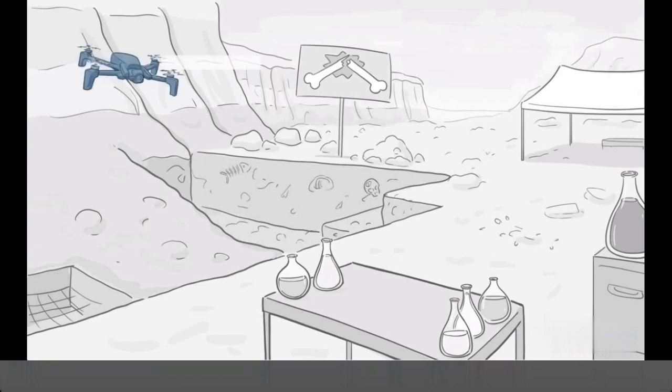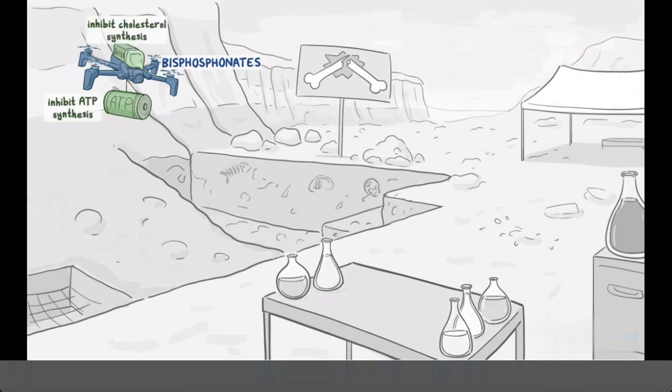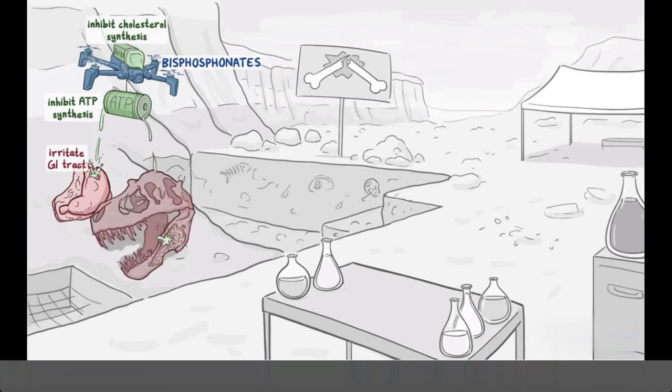At the fossil bed we can start with the bisphosphonates, which all have a suffix -dronate, so we'll place a drone flying over the site. Now under the drone it's carrying a battery with the word ATP on it, and on top of the drone is a stick of butter to represent cholesterol. This will help remind you that the mechanism of those drugs is either to inhibit ATP synthesis or cholesterol synthesis within osteoclasts. For side effects, the drone is leaking battery acid and it's damaging a rare fossilized stomach. This will help you remember that it irritates the GI tract. The battery acid is also damaging the jawbone of a T-rex, which represents osteonecrosis of the jaw.